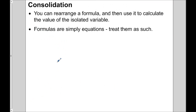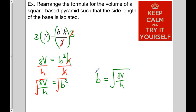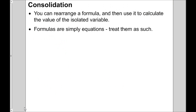To wrap things up: you can rearrange a formula and then use it to calculate the value of an isolated variable. For instance, if you want to find the base length of a pyramid knowing the volume and height, you can use the rearranged formula. You can rearrange first and then substitute, or substitute in the beginning — it doesn't really matter. Formulas are simply equations, so treat them as such and always use the balanced approach. I hope this video has made rearranging formulas clear — best of luck.